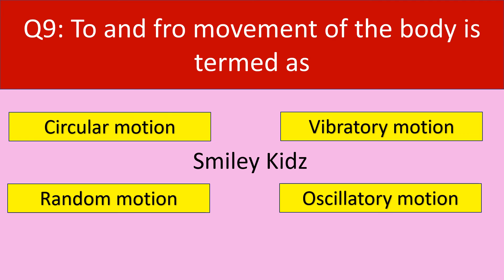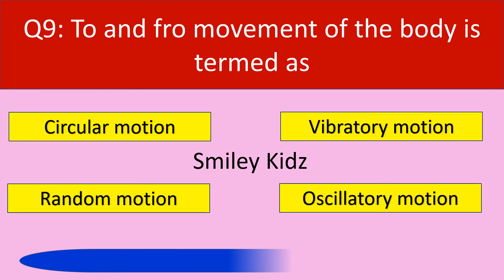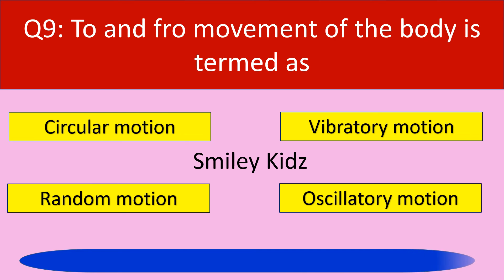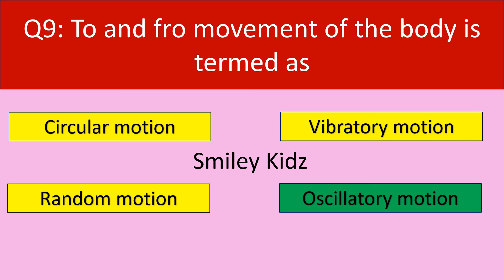Question number 9. To and fro motion of a body is termed as. Your options are circular motion, vibratory motion, random motion, oscillatory motion. Your time starts now. Time up. The answer is oscillatory motion. To and fro motion of a body is termed as oscillatory motion.